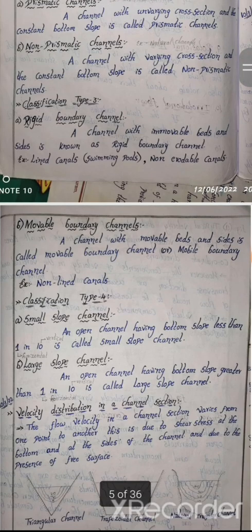Classification type 4: small slope channel and large slope channel. An open channel with a bottom slope less than 1 in 10 is a small slope channel. A channel with a bottom slope greater than 1 in 10 is a large slope channel. These are the classification types of open channels.